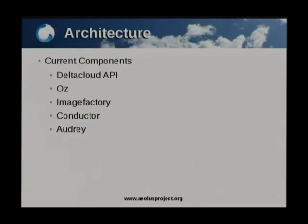Then you've got Image Factory, which builds images for your cloud providers. Image Factory takes the base image from OZ and splits that up into several sub-images for various cloud providers — provider-specific images. You've got Conductor, which is a high-level front-end for ELIS. It uses a WebUI to control the cloud providers, the hardware profiles, the clusters, and images and instances.